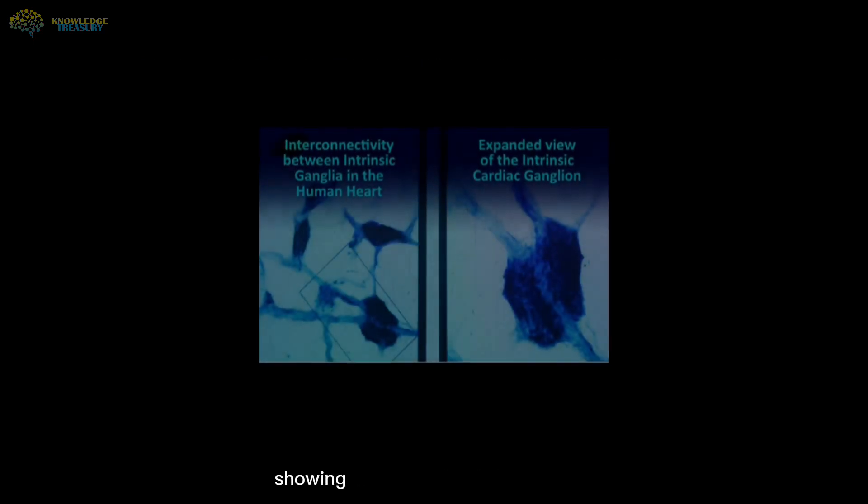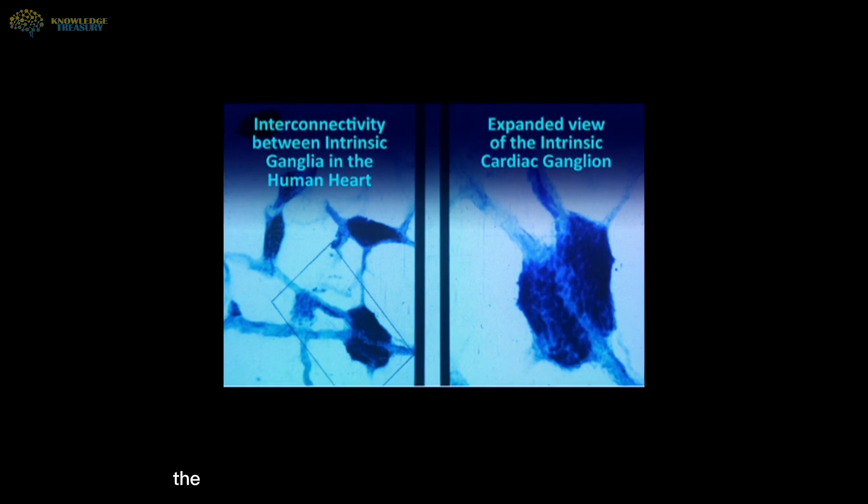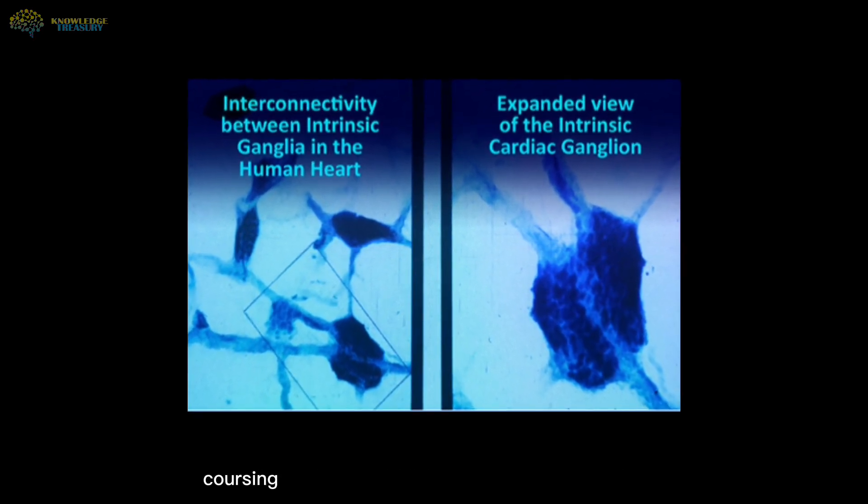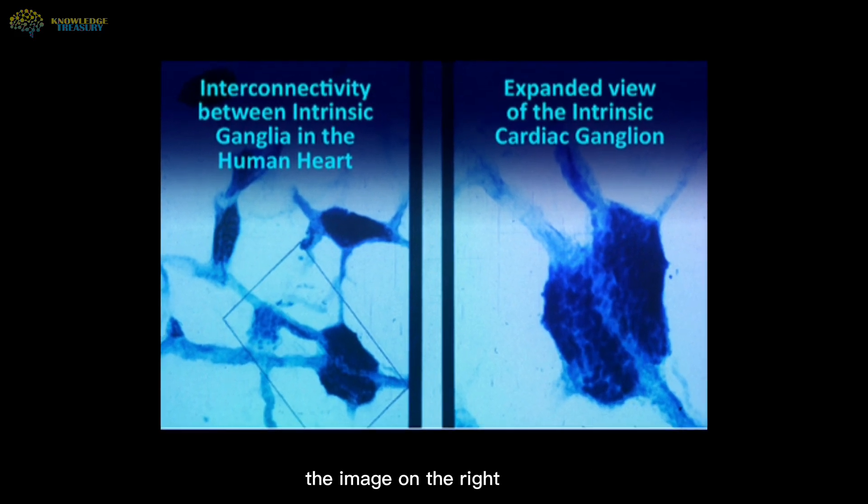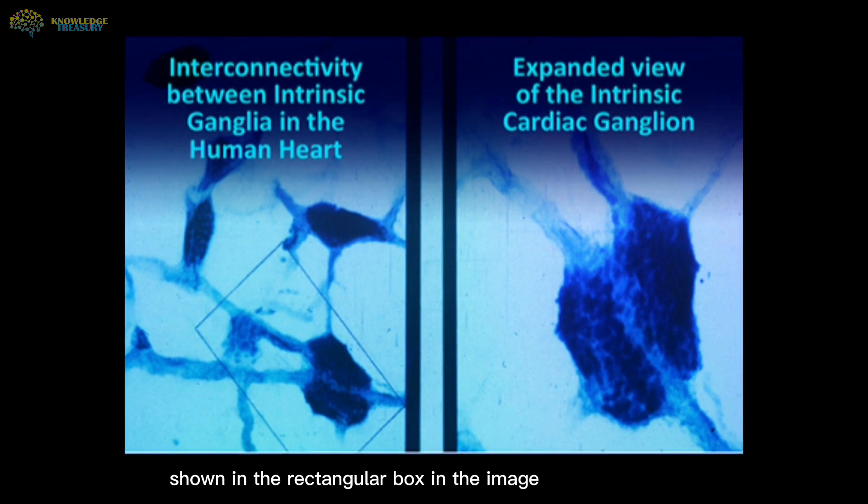This is a microscopic picture showing the interconnectivity between cardiac ganglia in the human heart. The light blue thin structures in the image on the left are multiple axons coursing between and connecting the ganglia. The image on the right is an expanded view of the ganglia shown in the rectangular box in the image on the left.